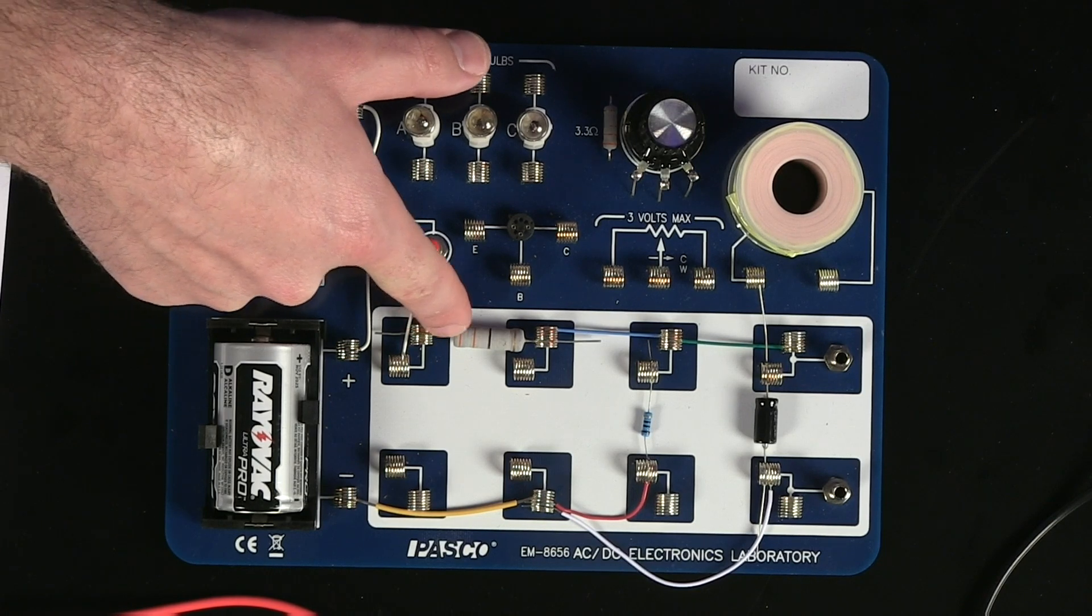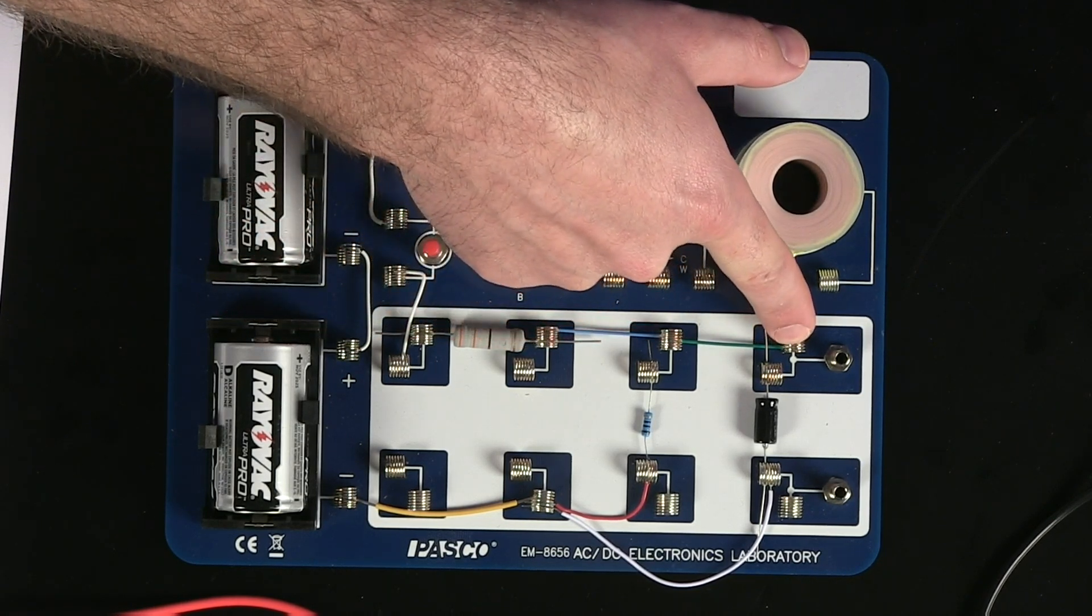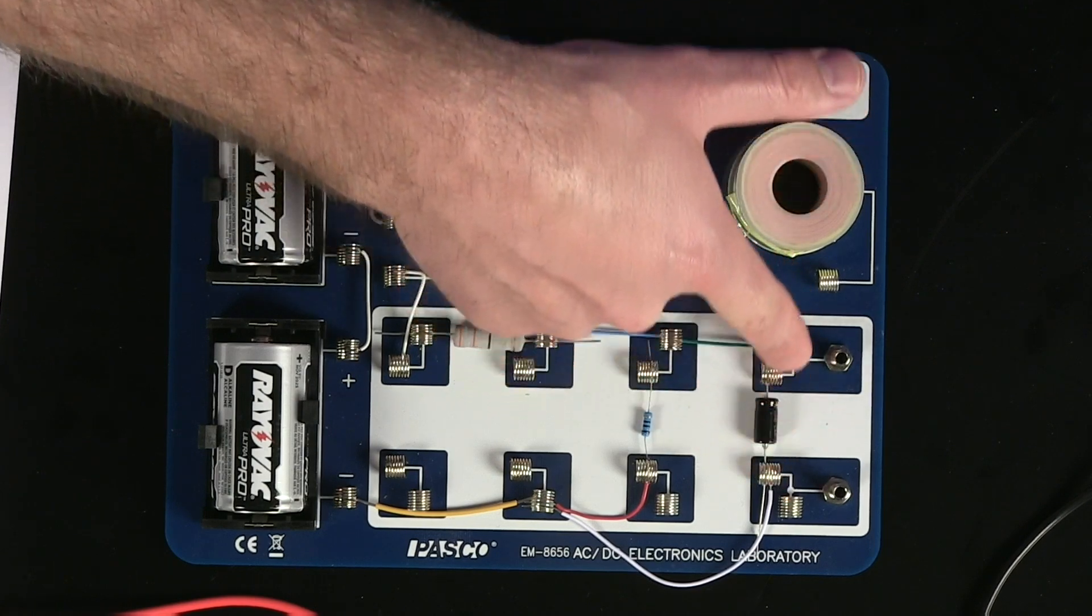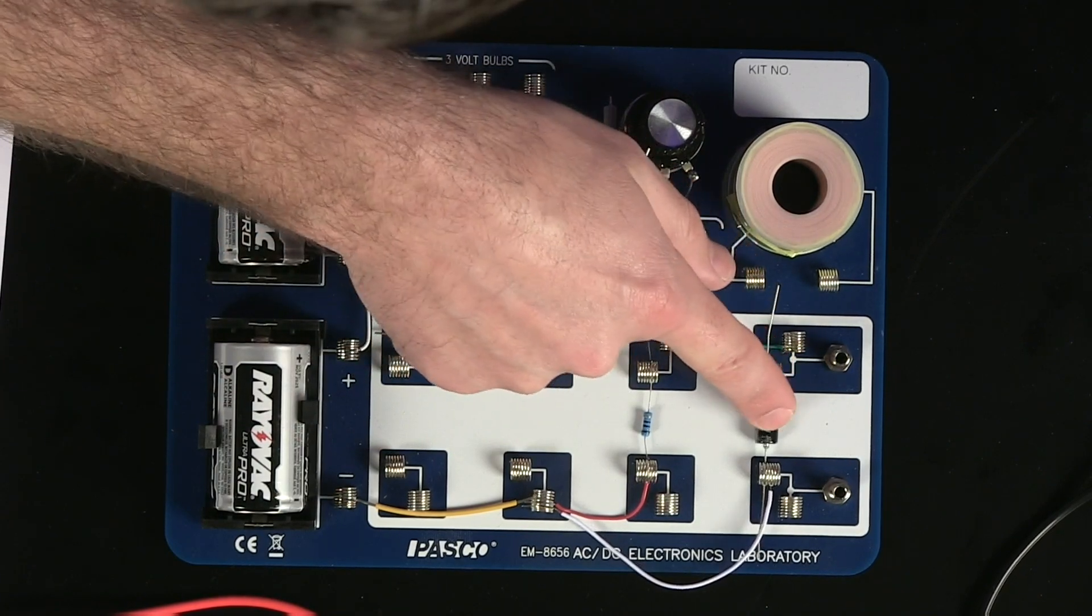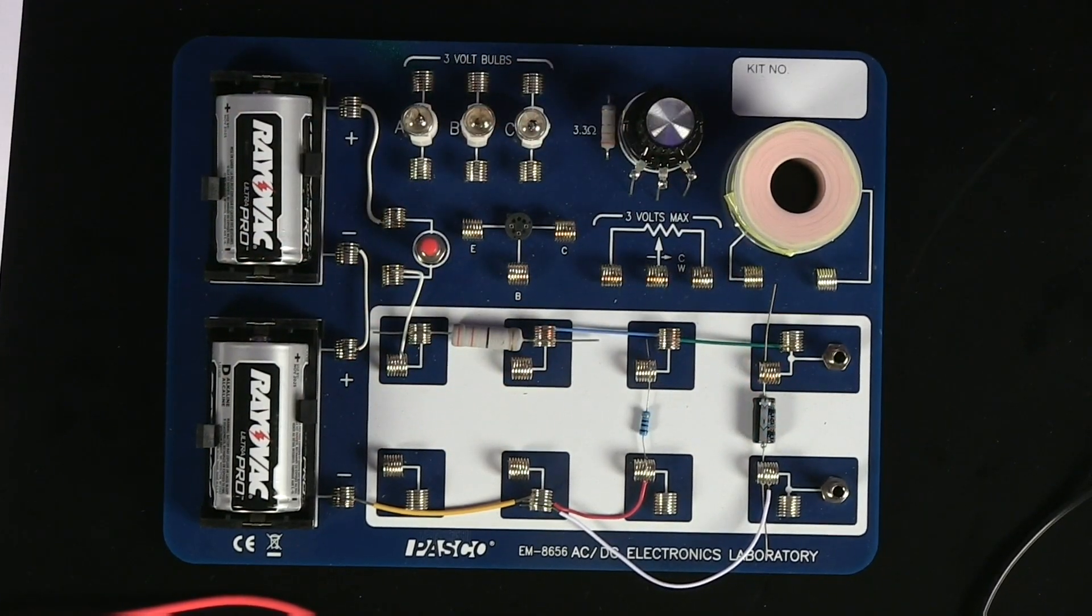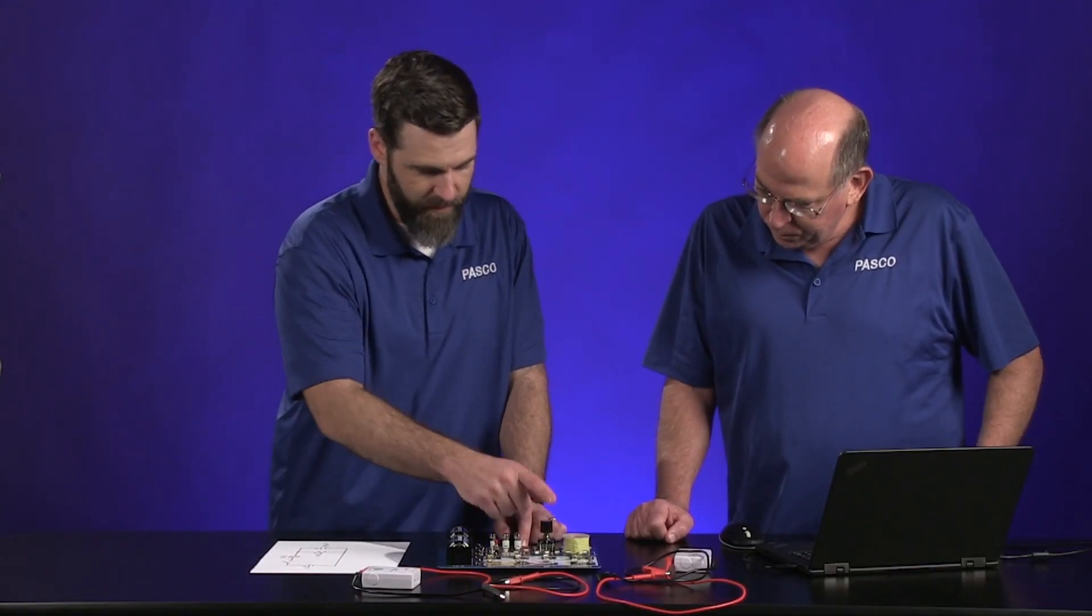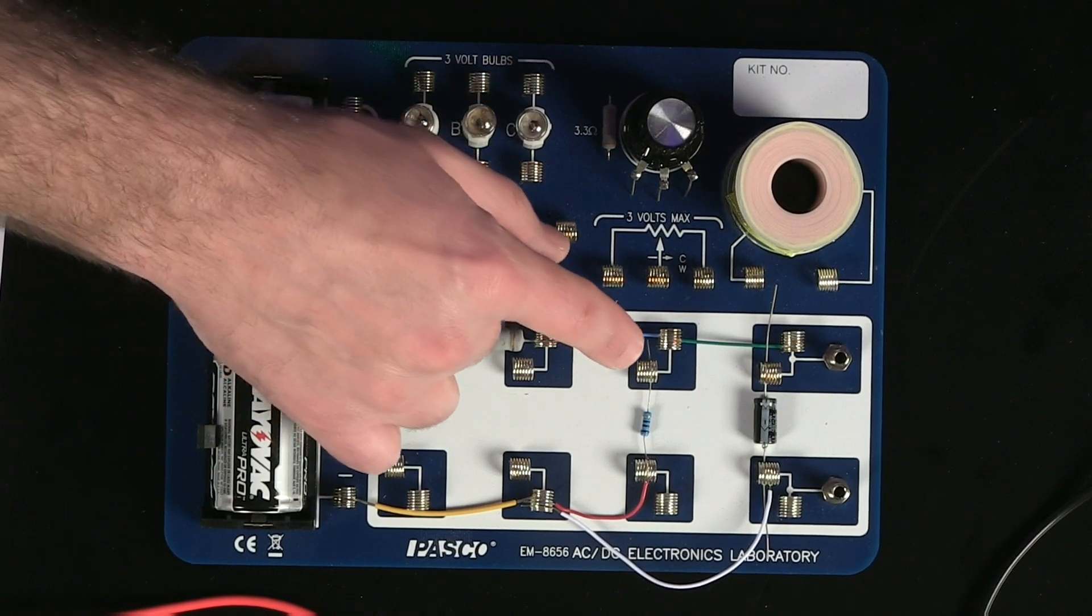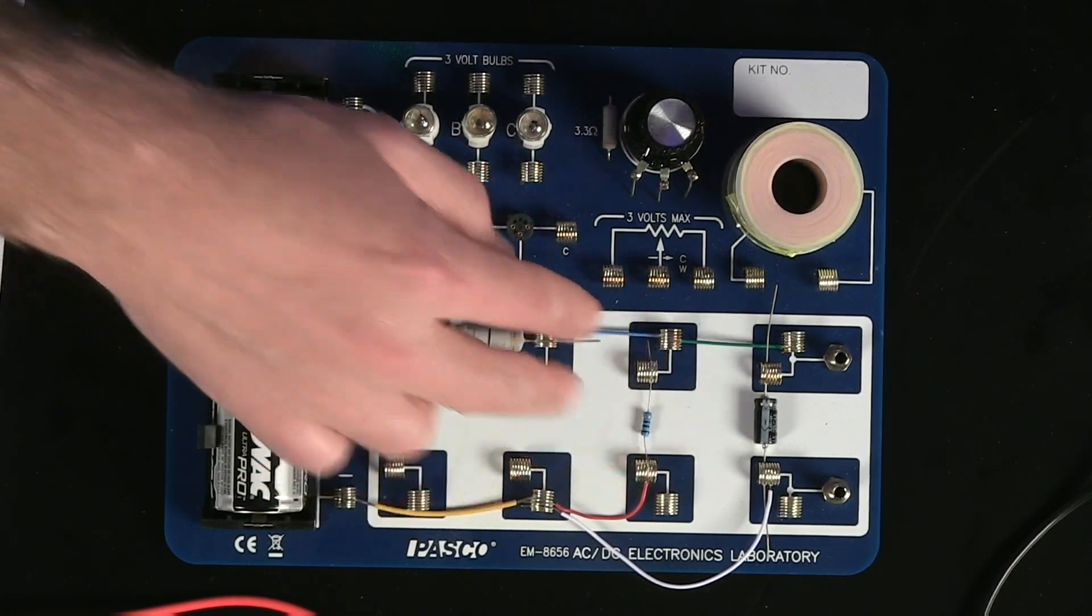And then we've got wires that connect across these two spring clips to a capacitor over here, which is 470 microfarads. And now you may have noticed the little arrows on that. Directional. Not all capacitors are, but this one is. Right. So we make sure that's set in the right direction. And then there's a resistor connected between these two spring clips right here.